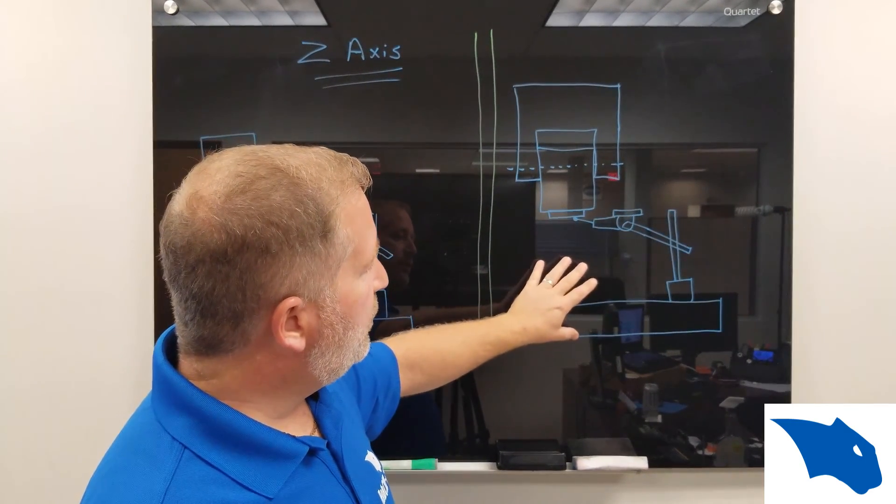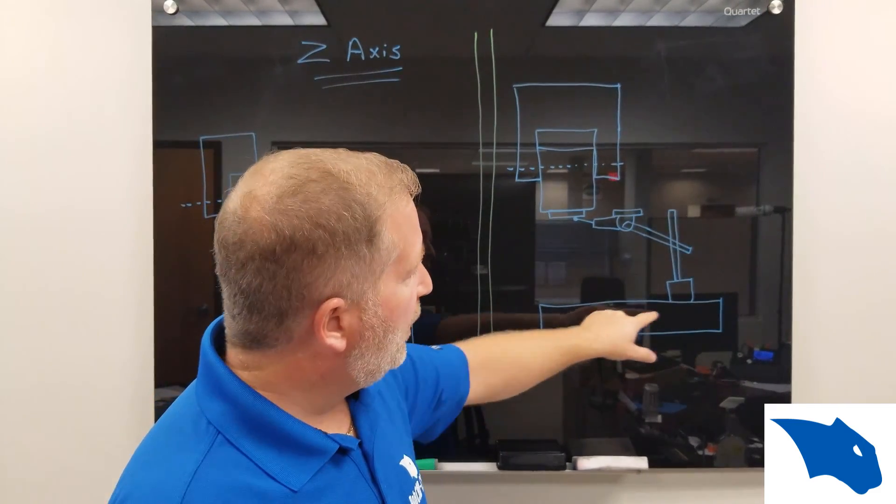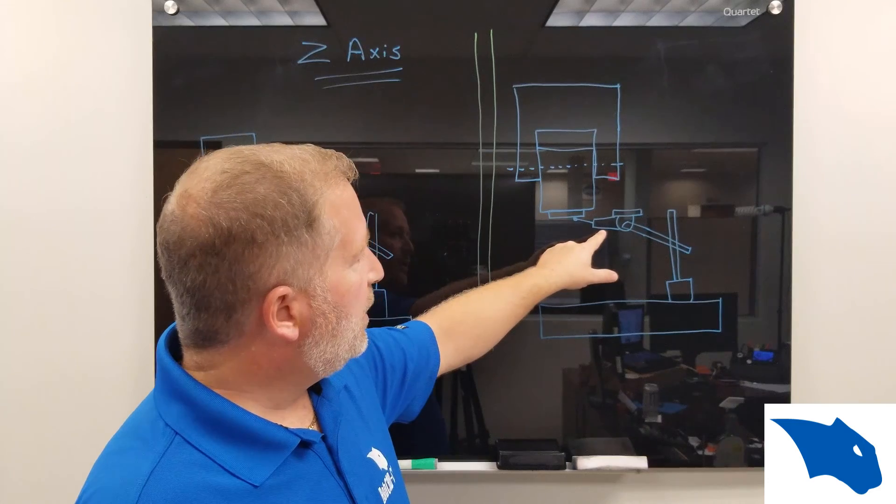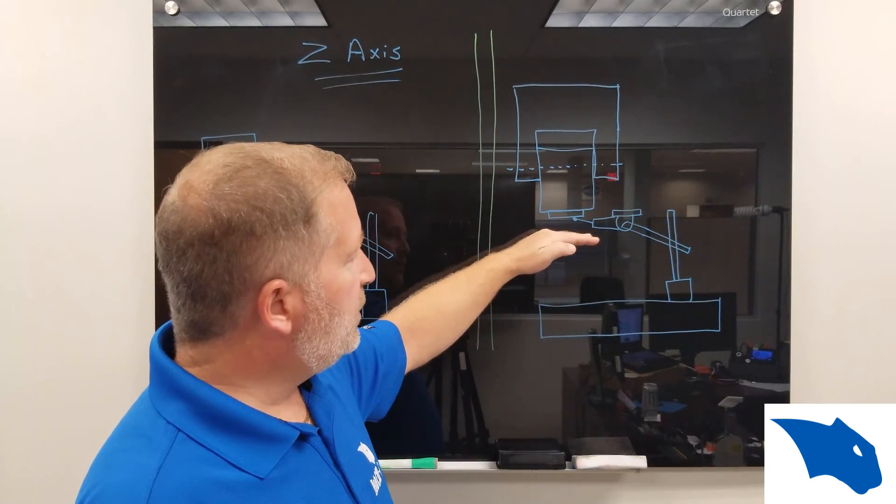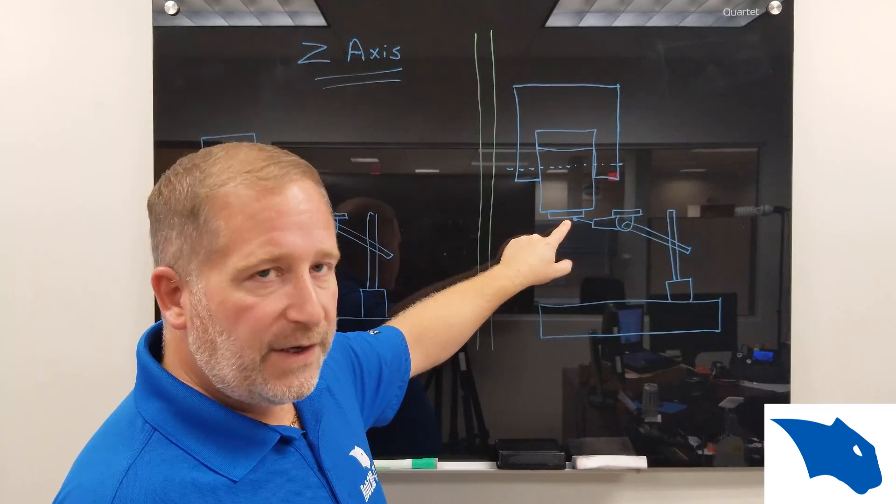and what we're going to want to do is on our router table, our machine table, we're going to want to set up an indicator base with an indicator on it in a horizontal position, because what we're going to do is touch off on the face of the spindle,